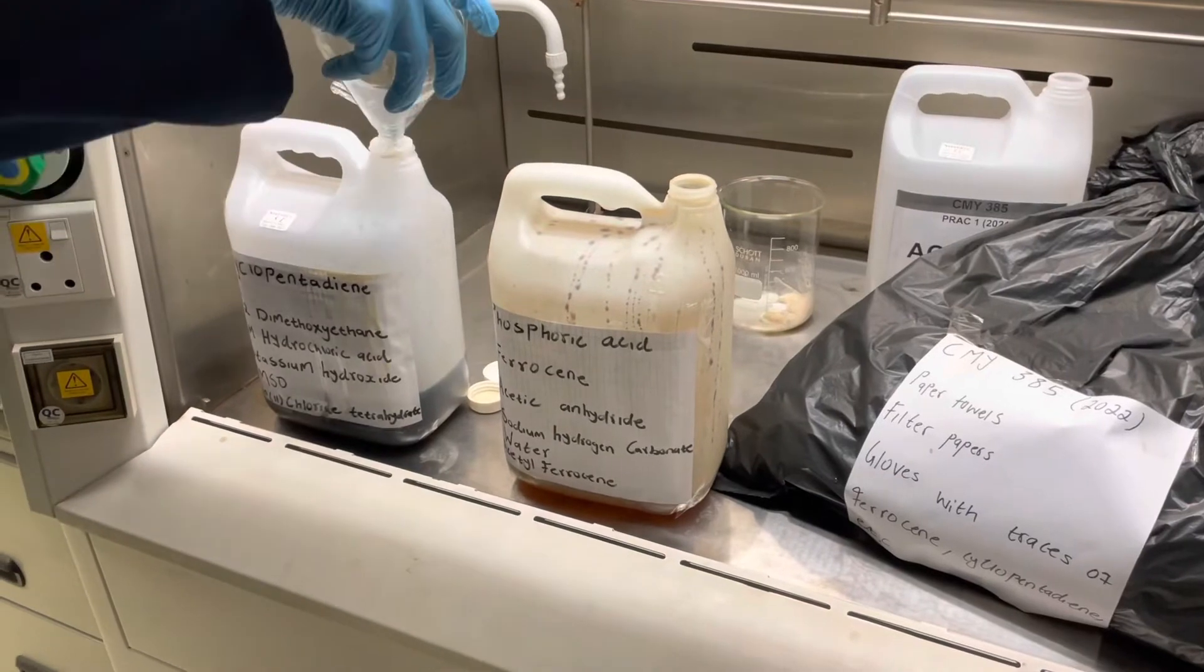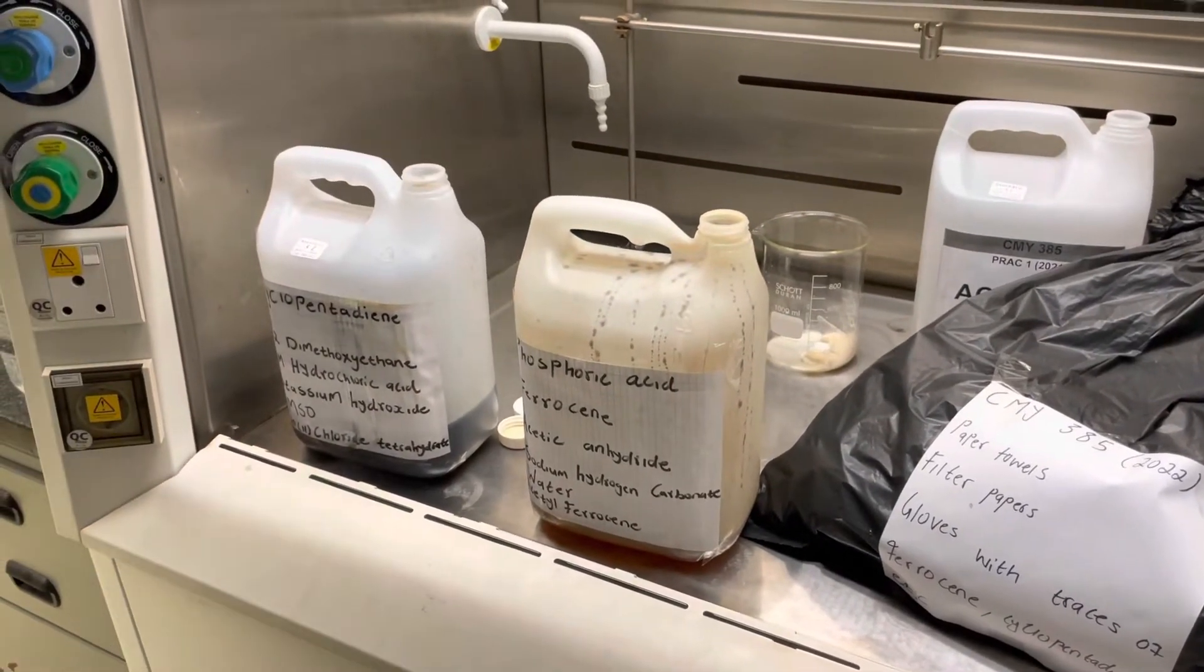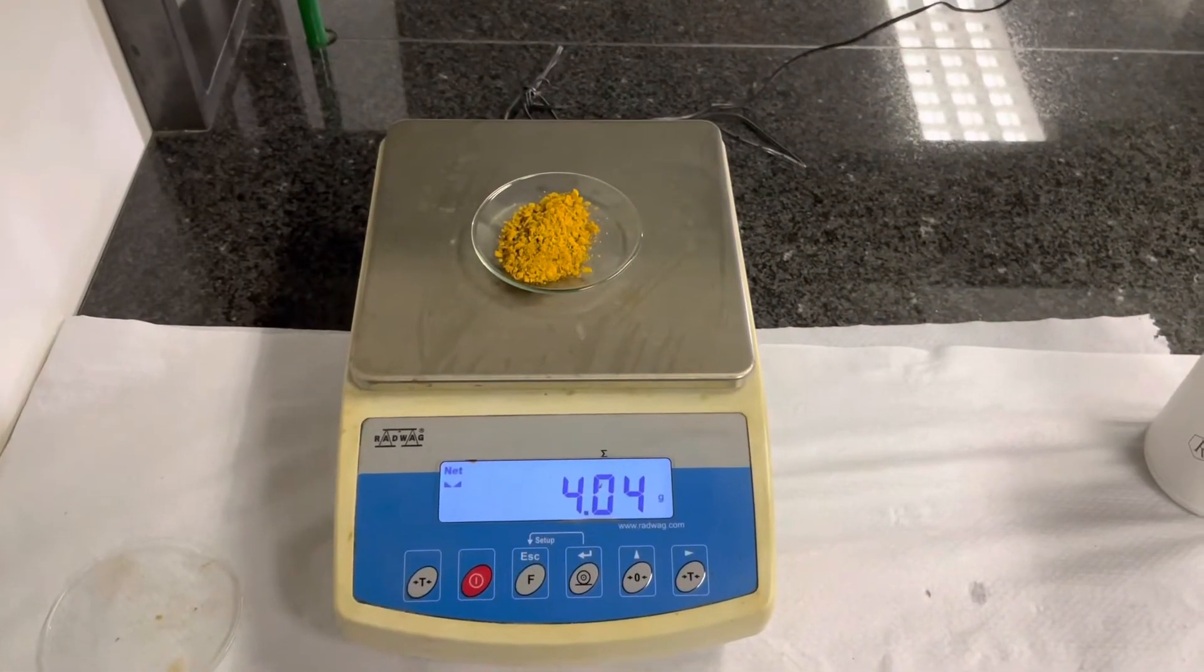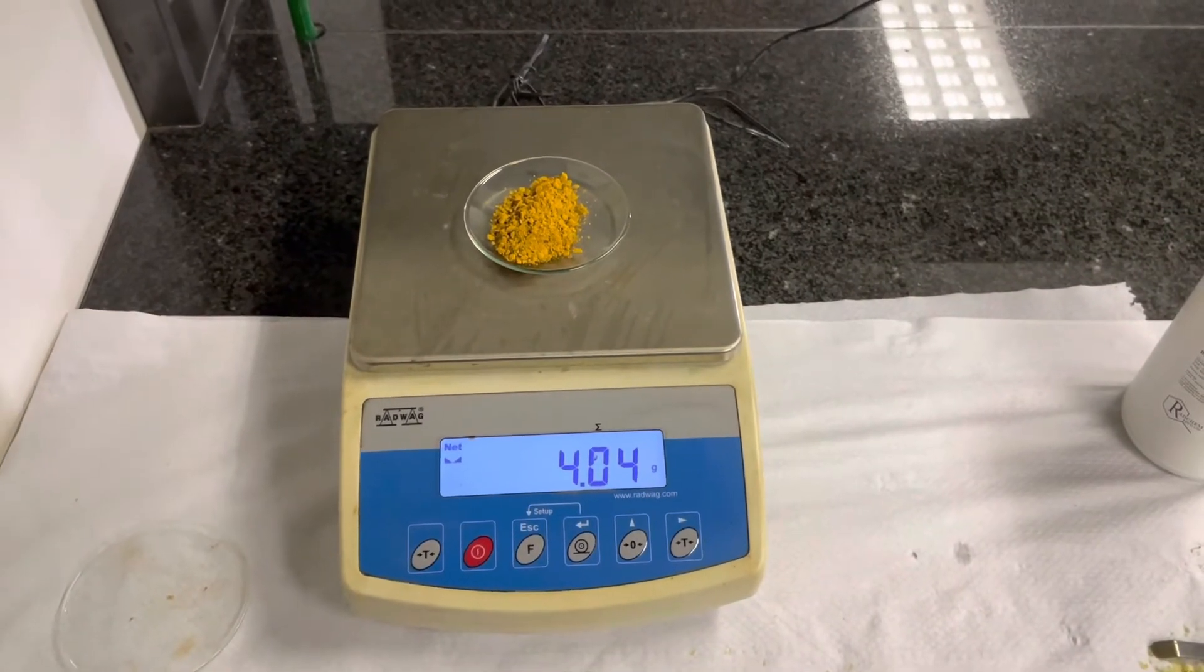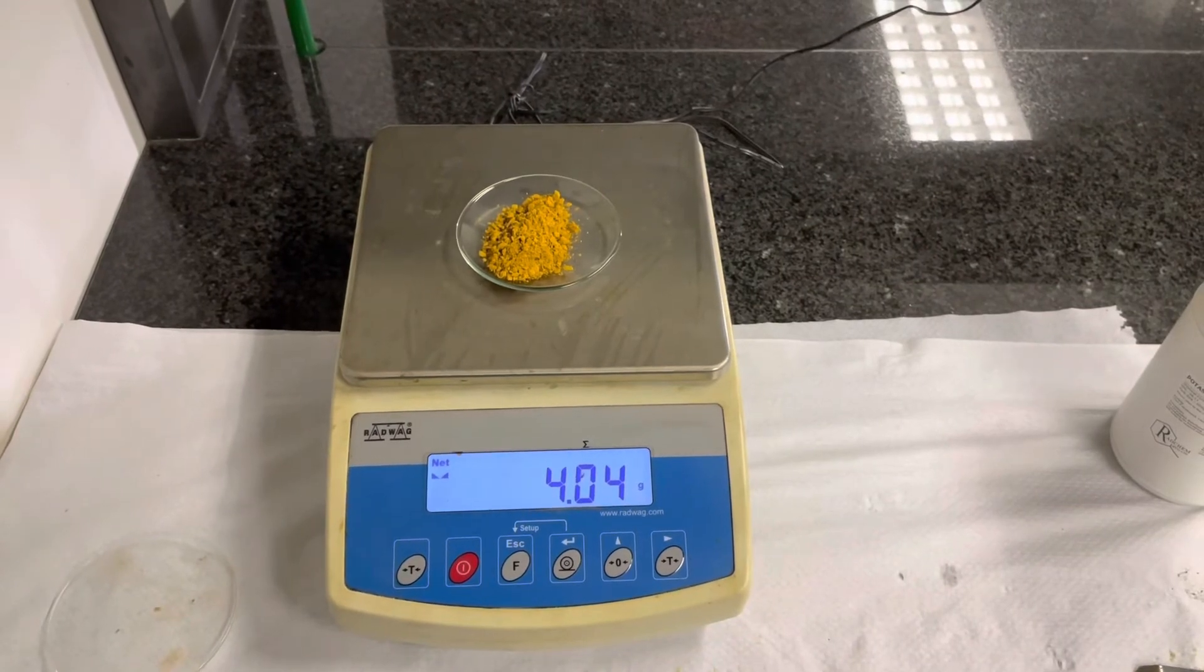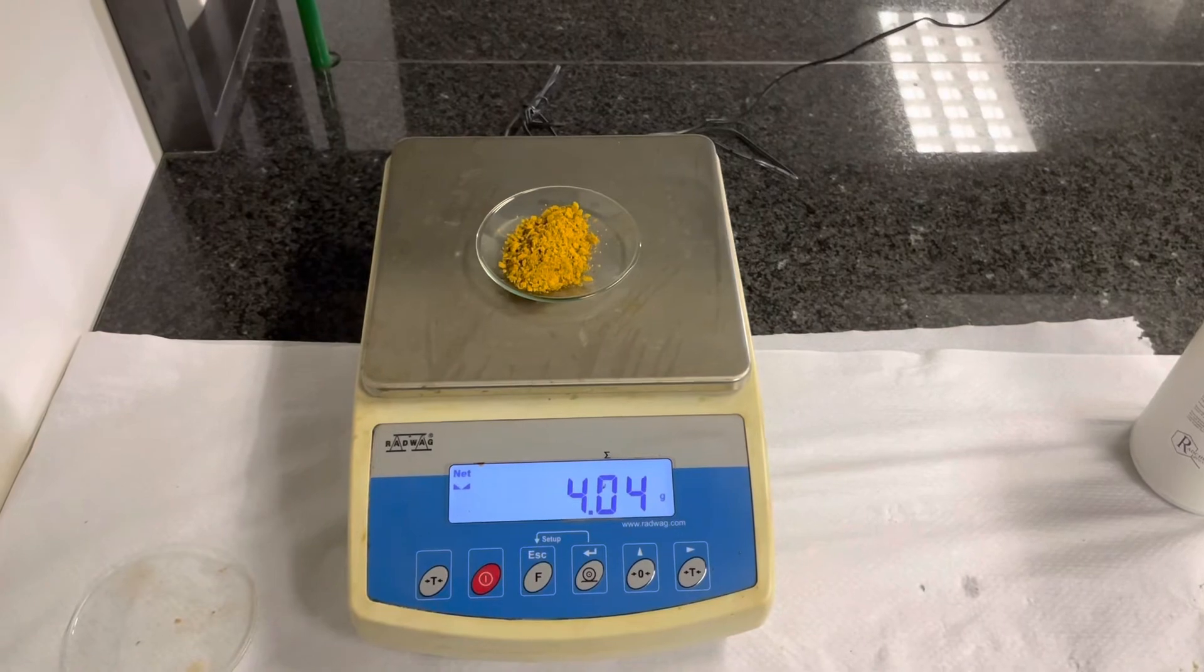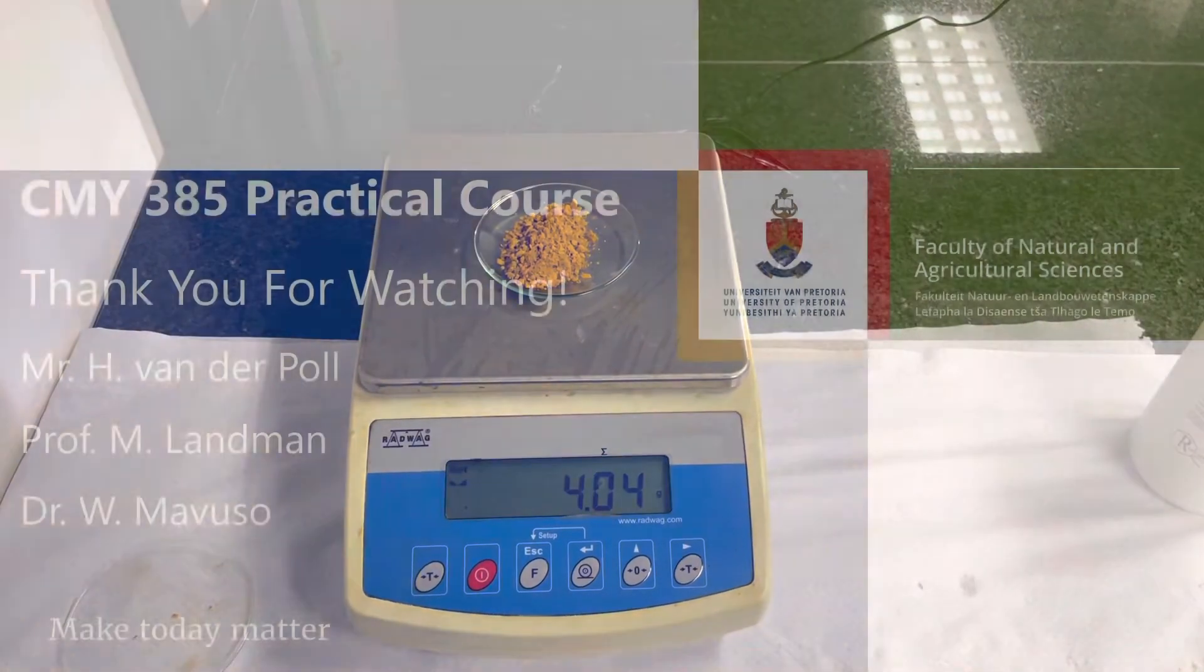There is our mass. We recorded a mass of 4.04 grams after drying. It should be an off-orange color, sometimes containing some dark black bits, which are of course impurities. Thank you for watching.